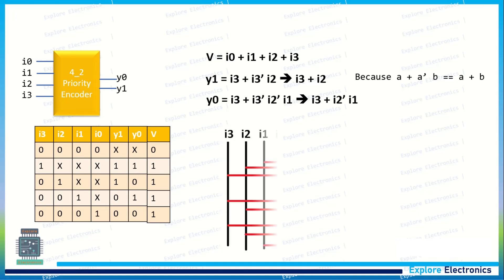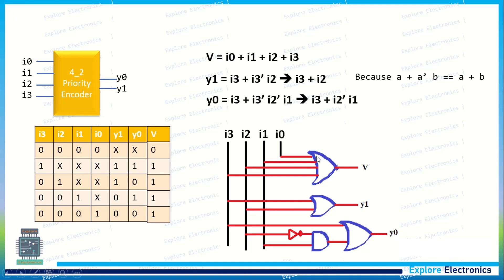Now let us implement this using basic gates. If we implement, this is the logical circuit we are going to get. V, that is the valid signal, will be having i0, i1, i2, i3, so I have taken i0, i1, i2, i3 to an OR gate. This gives V.